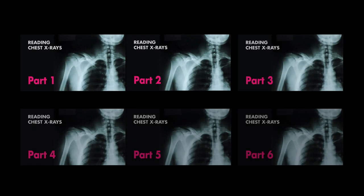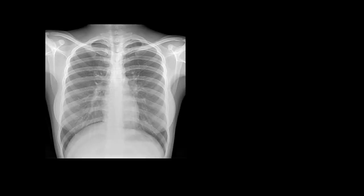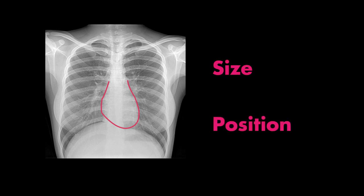We are now at C in our ABCDE mnemonic for reading chest x-rays, which stands for cardiac. If you haven't seen the other videos, be sure to check the playlist or visit the links in the description below. When assessing the cardiac silhouette, you should be thinking about a few things: the size of the heart and the position of the heart.